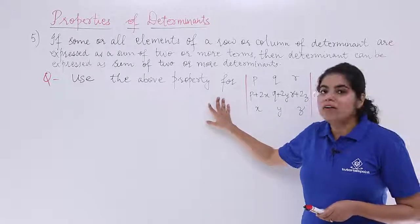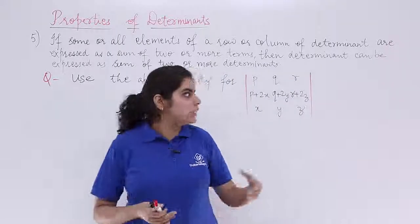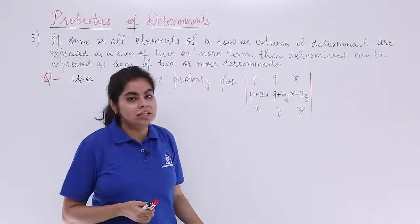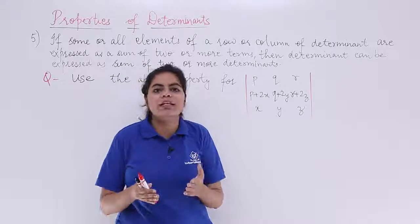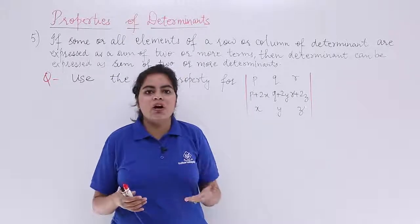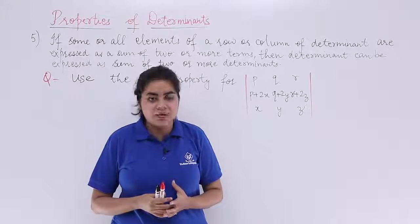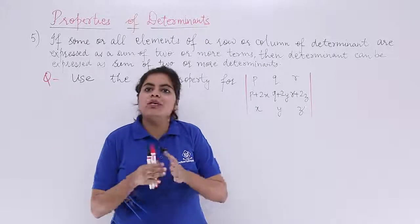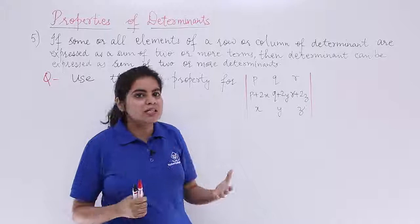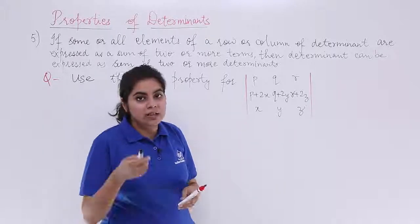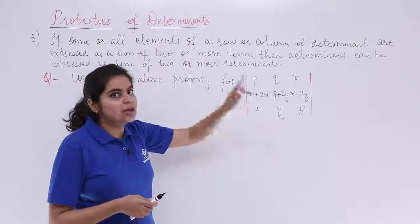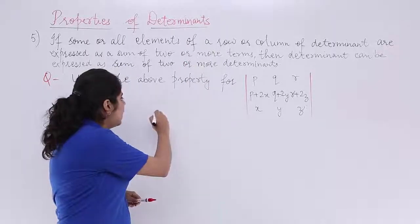It says that use the above property for a determinant. The above property is what? It says that if in a determinant any row or any column is such that the elements are expressed as the sum, what you can do is you can separate the determinants. So that is what we are going to do. So this determinant which you have will be solved with the help of the above property. Let's see how.